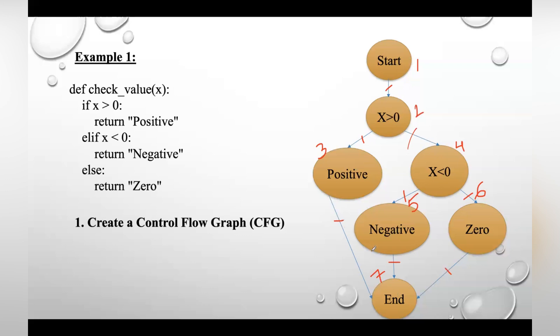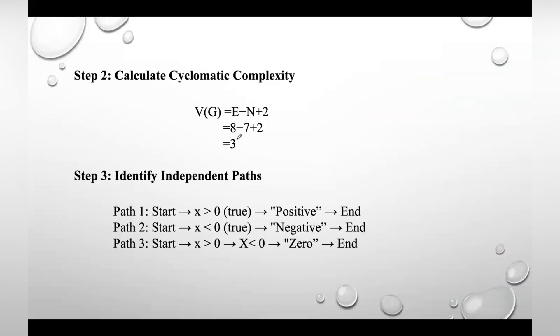So we have eight edges. Number of nodes depends on number of blocks, so we have seven blocks. Now V(G) will be 8 - 7 + 2, which gives you 3. It indicates that there are three test cases, or we need to design three test cases for this given code.